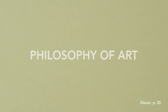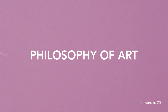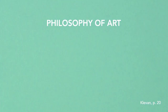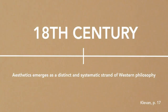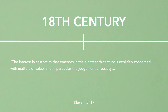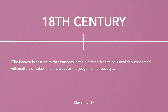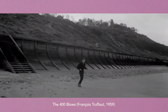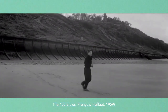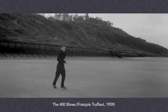Sometimes the philosophical subfield philosophy of art is encompassed within aesthetics, which broadens the scope even further to include topics such as ontology, definitions of art, spectatorship, and the characteristics of fiction. If we focus on the 18th century's understanding of aesthetics, the term begins to take on more definition by implicating an expressly evaluative component. As Clevin elaborates, the interest in aesthetics that emerges in the 18th century is explicitly concerned with matters of value, and in particular the judgment of beauty. For Alexander Baumgarten, the field of aesthetics would provide a foundation for explaining and justifying human judgment about what is and what is not beautiful. As we shall see, the multifaceted nature of aesthetics can especially be observed in discussions on film — a medium with an ontology ever in flux and its artistic merits constantly weighed.